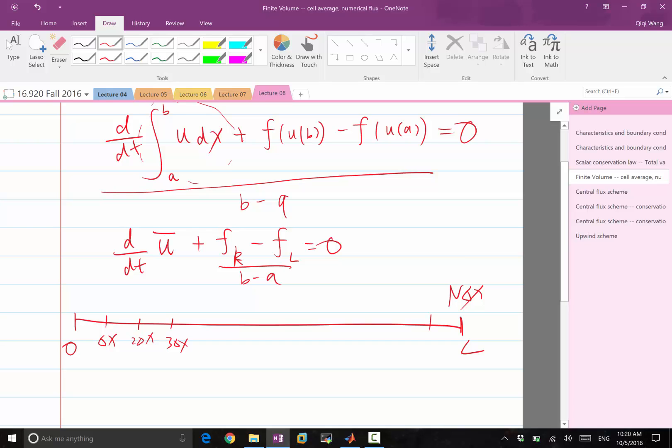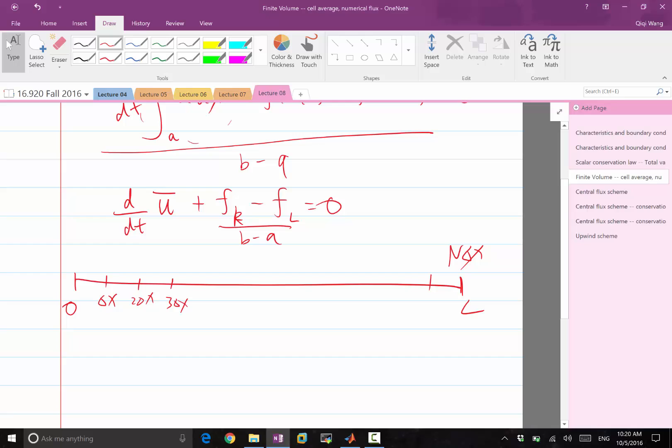How many of these averages do we have? So be very careful about the distinction between finite volume and finite difference. In finite difference, depending on boundary conditions, we may have n minus 1 unknowns, we may have n plus 1 unknowns, we may have n unknowns if the two sides have different boundary conditions. For finite volume, we always have n unknowns, the number of intervals, all right?